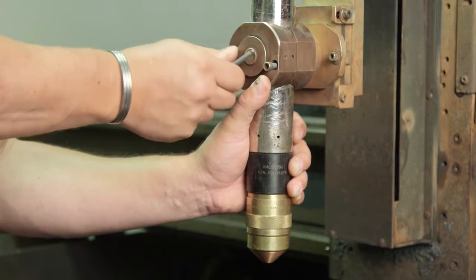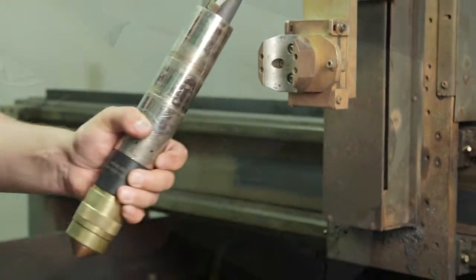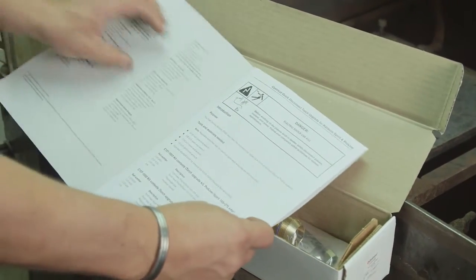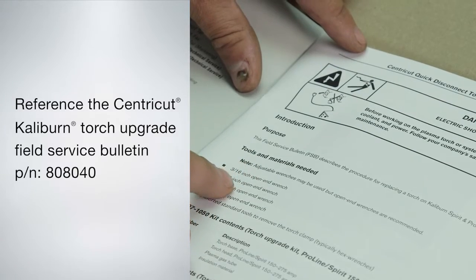You will also need the nozzle and electrode removal tools that came with your Caliburn system. You can reference the field service bulletin for the CenterCut quick disconnect torch upgrade for a complete list of tools and instructions.